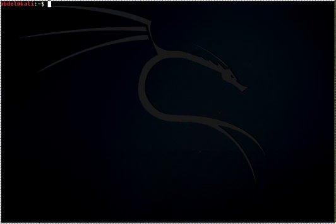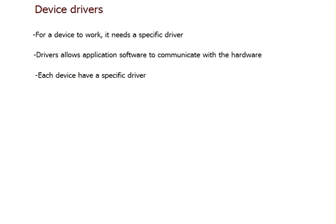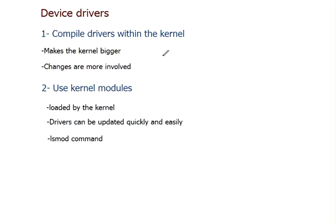In Linux, like in every other operating system, for a device to work you need a specific driver for that device. The driver is specific to the operating system and the architecture — either 32-bit or 64-bit. In most Linux operating systems the driver comes with the kernel and works out of the box, but sometimes you may face problems with devices not working properly, so you need to do some troubleshooting by checking information about the device driver, or removing it. That's what we're going to learn in this video.